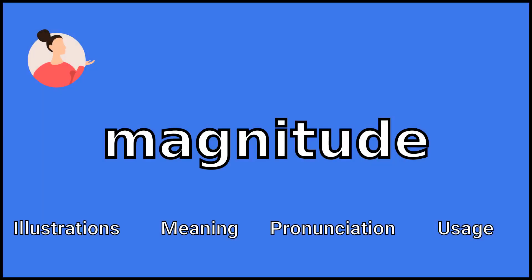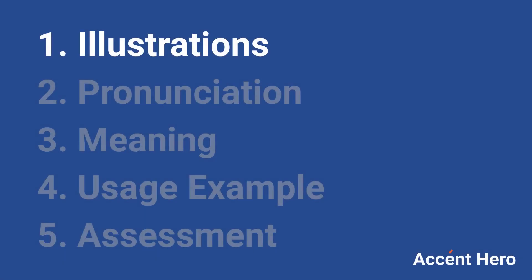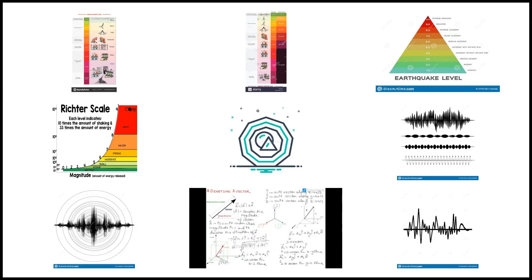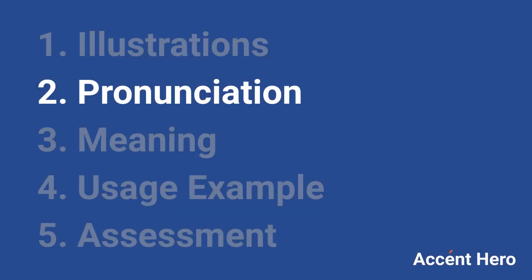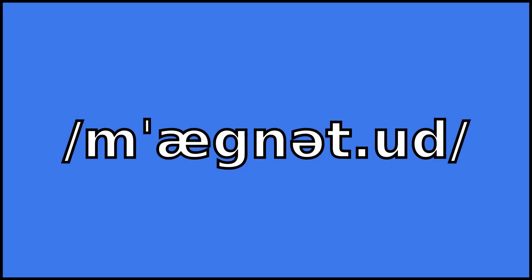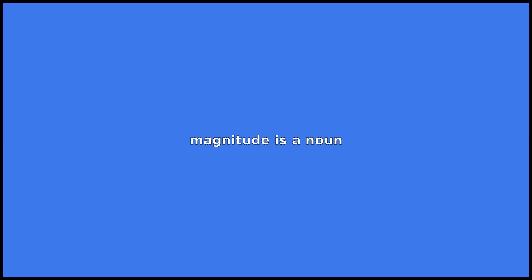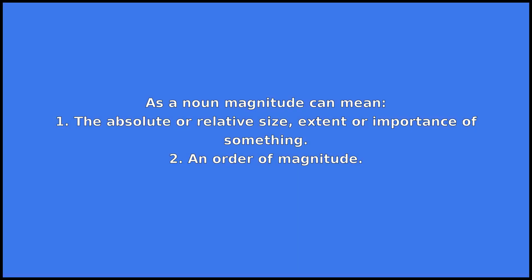Magnitude. Magnitude is a noun. As a noun, magnitude can mean: 1. The absolute or relative size, extent, or importance of something.